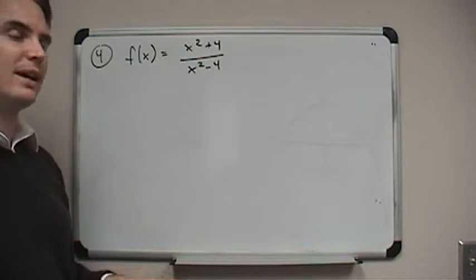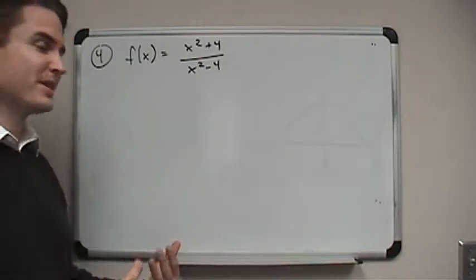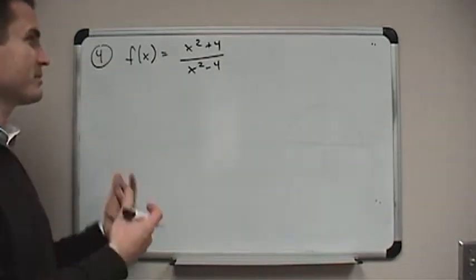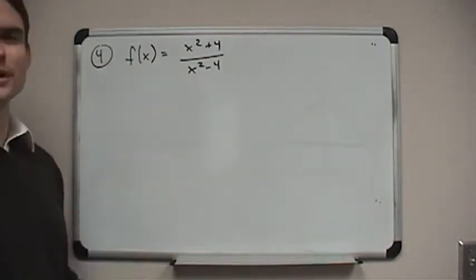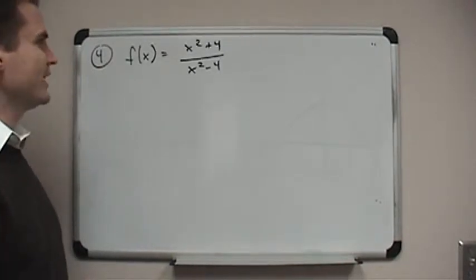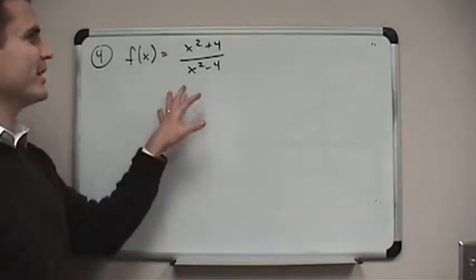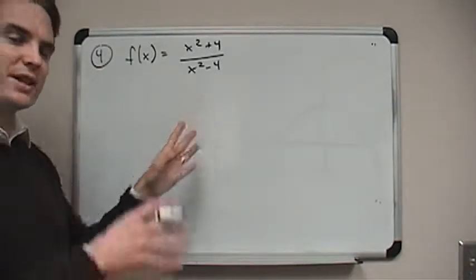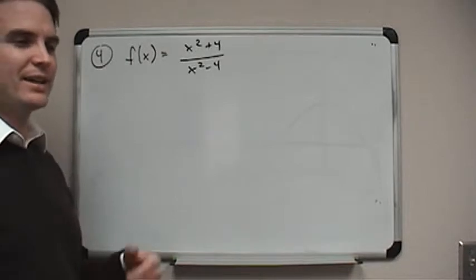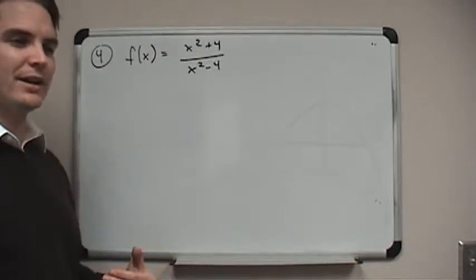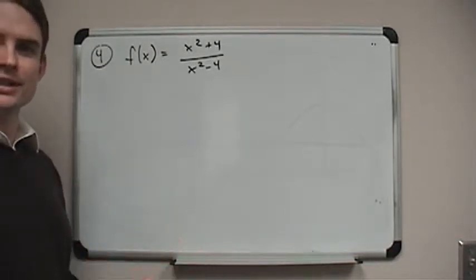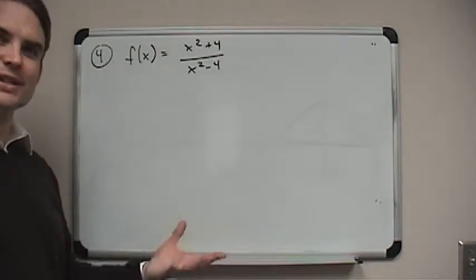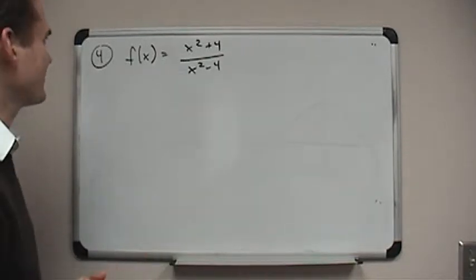Remember, a function is concave up whenever the second derivative is positive, and it's concave down whenever the second derivative is negative. So finding out where a function is concave up and concave down is a lot like finding where a function is increasing and decreasing, except all of that analysis goes to the second derivative.